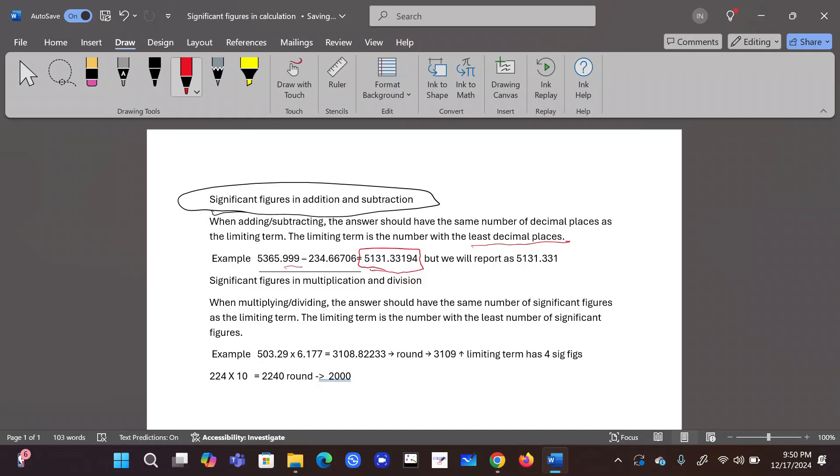Three. How many here? One, two, three, four, five. We have to report in terms of least. Therefore, our answer should contain only three decimal places because three is least decimal place. So 33194, I change it to 331. That is the correct answer.